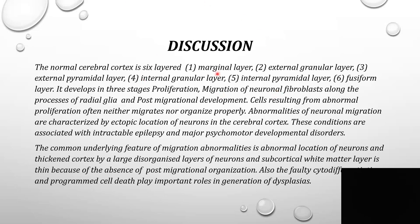The normal cerebral cortex is six-layered, consisting of the marginal layer, external granular layer, external pyramidal layer, internal granular, internal pyramidal, and fusiform layer. Cerebral cortex develops in three stages: proliferation, migration of neuronal fibroblasts along the processes of radial glia, and post-migrational development. Cells resulting from abnormal proliferation often neither migrate nor organize properly. Abnormalities of neuronal migration disorders are characterized by ectopic location of neurons and are associated with intractable epilepsy and major psychomotor developmental disorders. The common underlying feature is a thickened cortex with a large disorganized layer of neurons and thin subcortical white matter due to absence of post-migrational organization. Faulty cytodifferentiation and programmed cell death play important roles in generation of dysplasias.